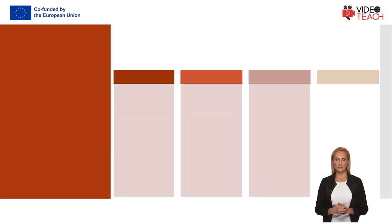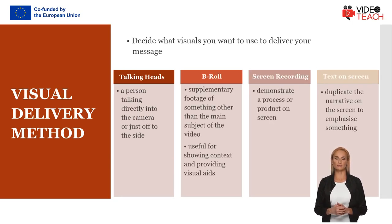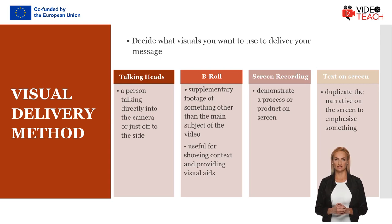Once you've settled on the appropriate video type, it's time to decide what visuals you want to use to deliver your message, such as talking heads, b-roll, screen recordings, and text on screen. A talking head is a person talking directly into the camera or just off to the side. B-roll is essentially supplementary footage of something other than the main subject of the video, useful for showing context and providing visual aids. A screen recording is a perfect way to demonstrate a process or product on screen, and text on screen is a way to duplicate the narrative in case you want to emphasize something. The type of visual you choose will determine how you write a video script. For example, if the main visual is screen recordings, the script will have a more demonstrative tone or include step-by-step instructions.